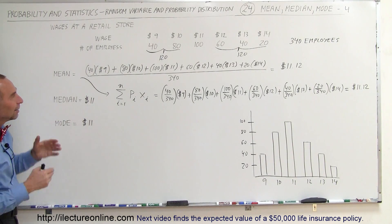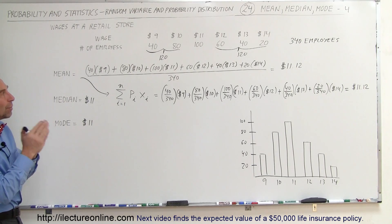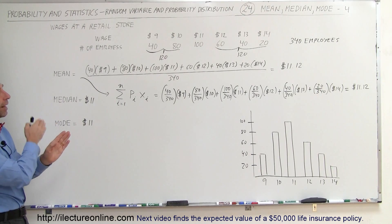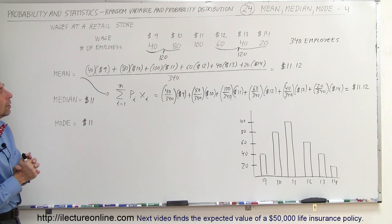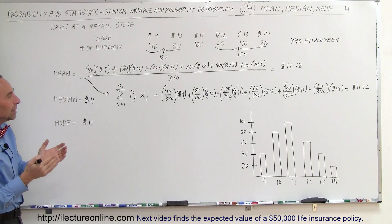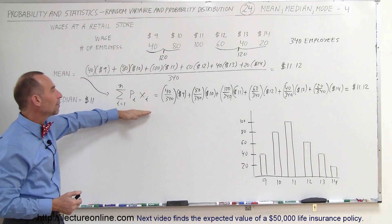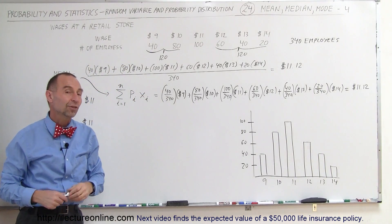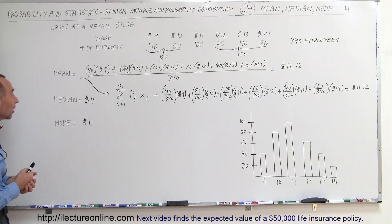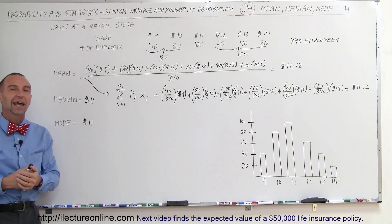So we call that the mode, the median, meaning the wage in the middle where half the people earn less and half the people earn more. And then finally, the average or the mean is simply adding all the wages together divided by the total number of people and you get $11.12. And so that's how we, in this case, calculate the mean, the median, and the mode.